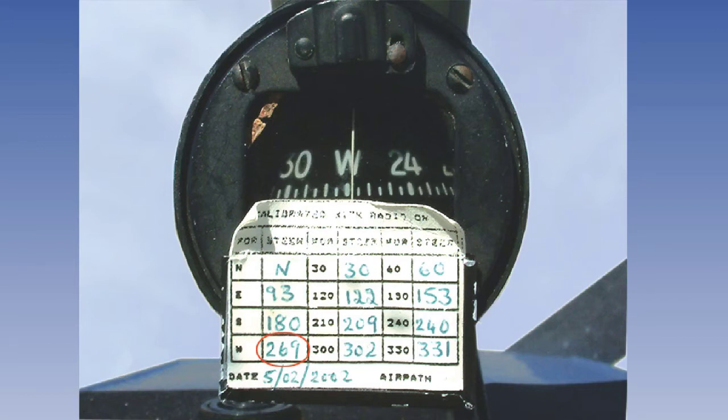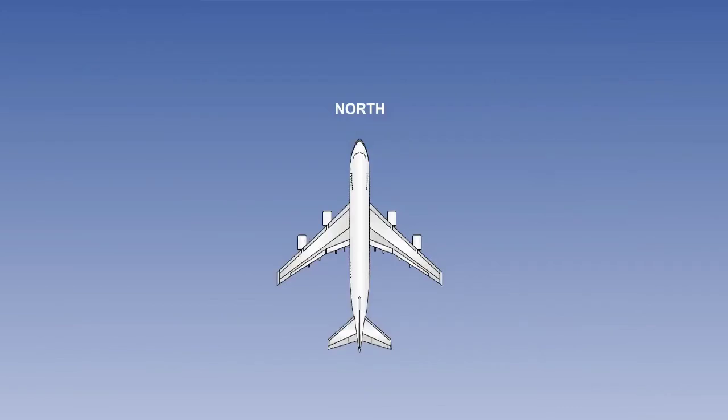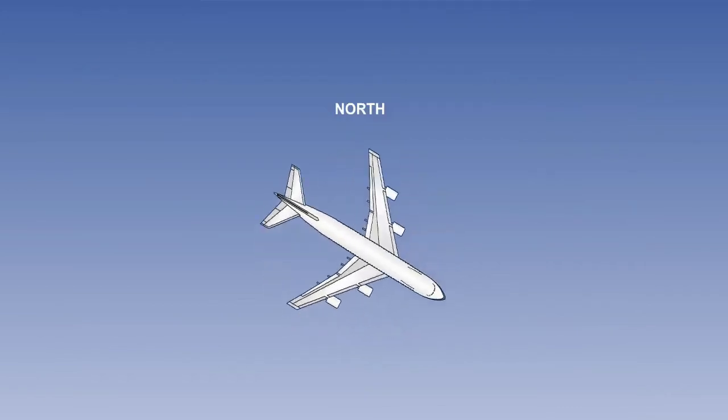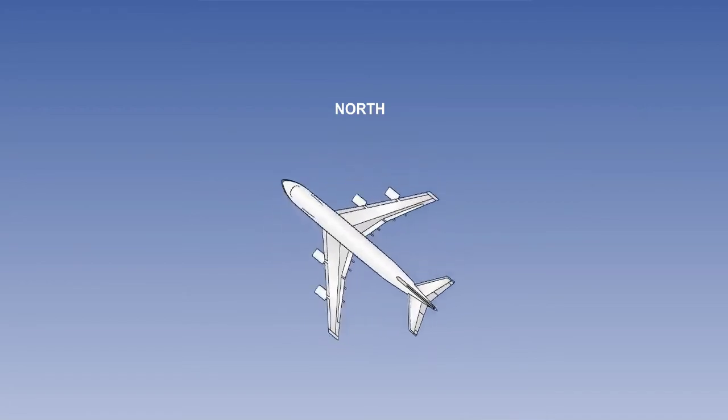To determine deviation, engineers carry out what is called a compass swing, where the actual magnetic heading is compared to the aircraft indication of magnetic heading.